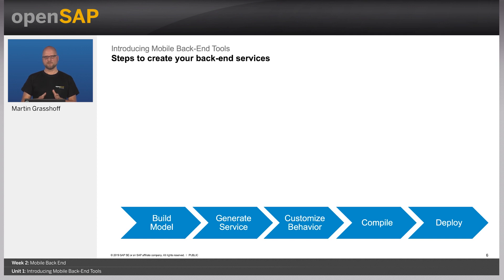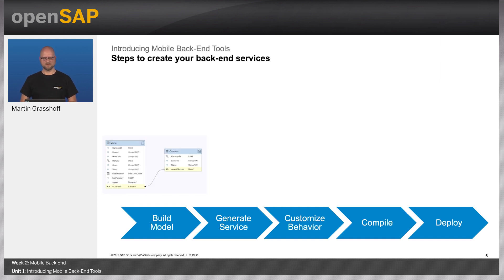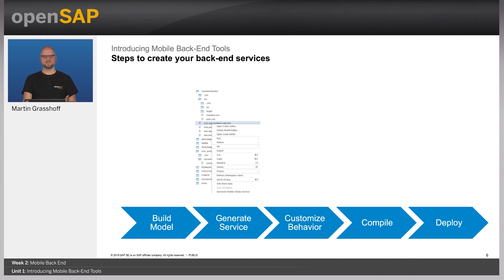So we have seen the architecture, but how do I build it? You basically start with a project in the Web IDE, and in that project you build your model — using the graphical editor to create a service model, which looks quite similar to traditional entity relationship modeling. You have your entities and you connect them with relations, called navigational links in OData. Once you're done, you press a button and generate the service. By generating the service, you send the model to a generator, and the generator returns a fully completed Java project to you.